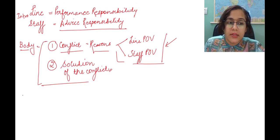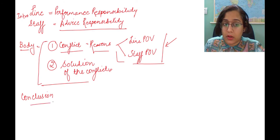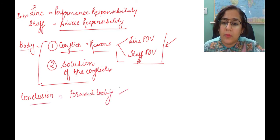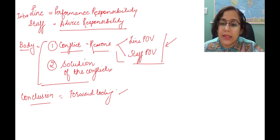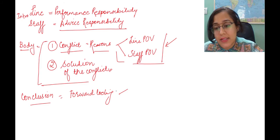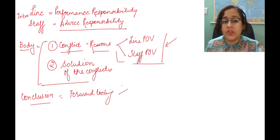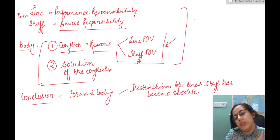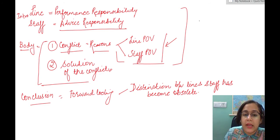The last thing in the conclusion, it is always better to have a forward looking conclusion. Herein we will say that in the modern organizations, this distinction between the line and staff authority has actually become obsolete. Now this is a very general framework of the answer and believe me everyone is going to write this. How can you make your answer stand apart is the fact that you use diagrams into it and then convey your ideas through the said diagram.